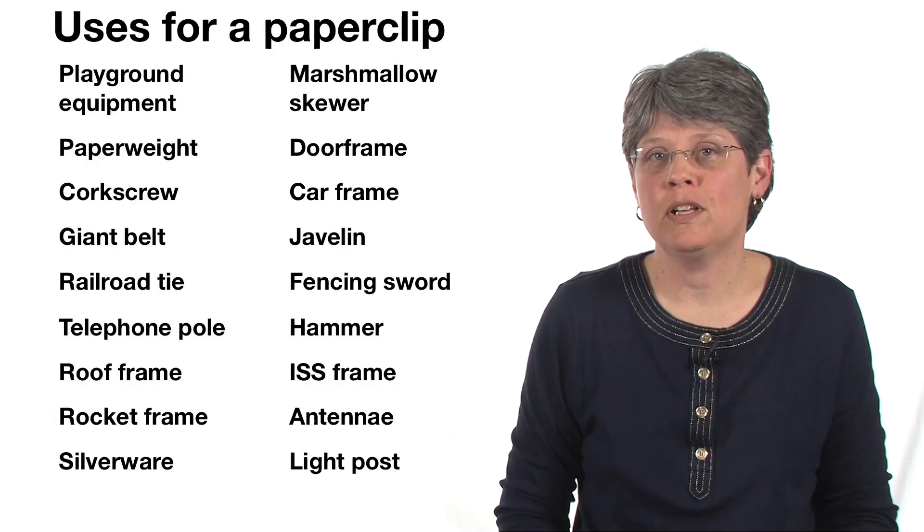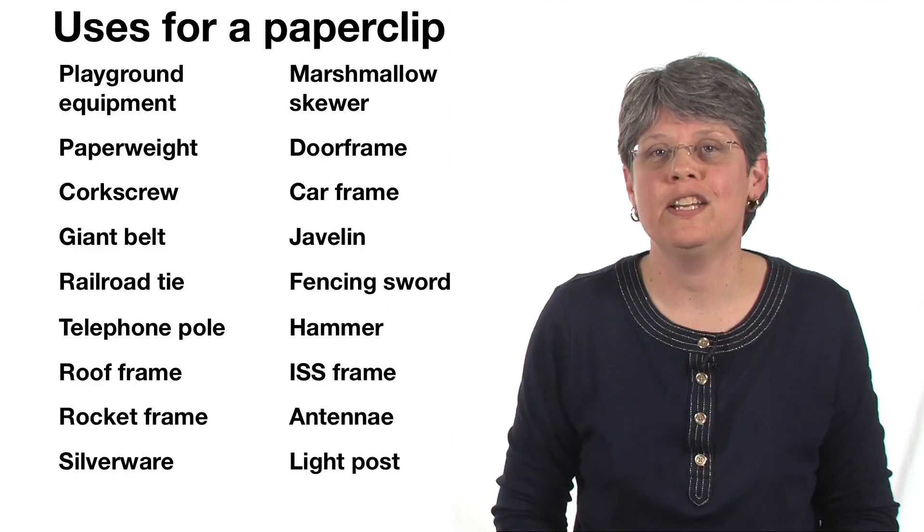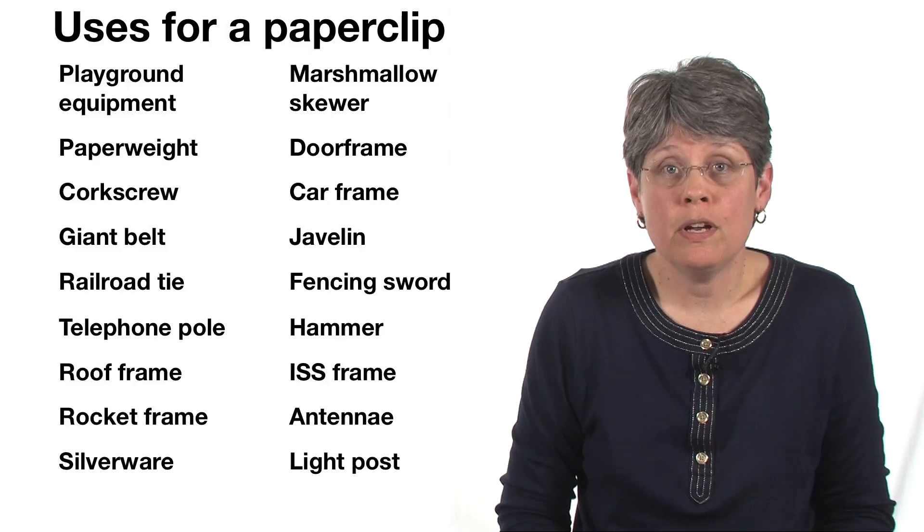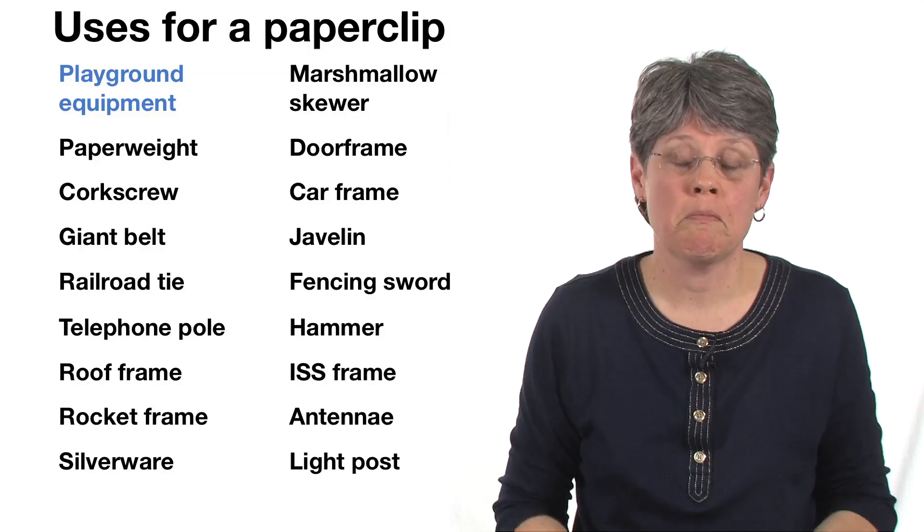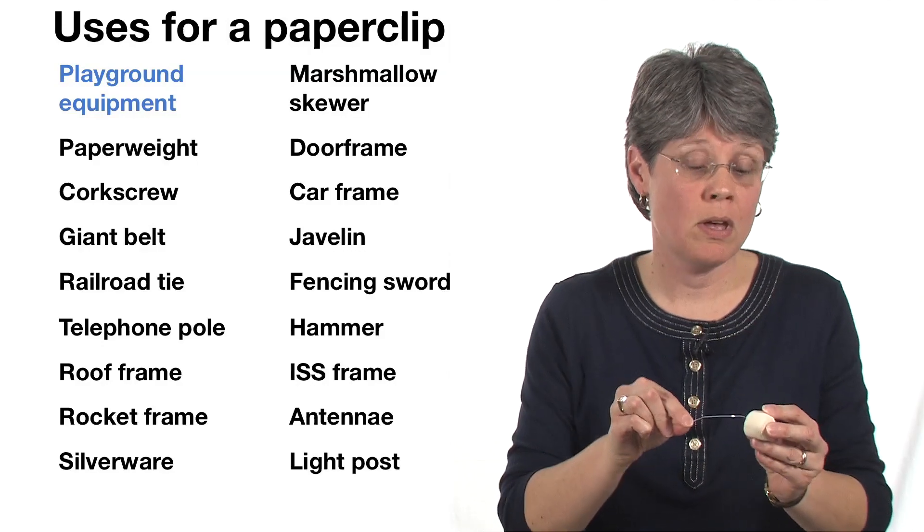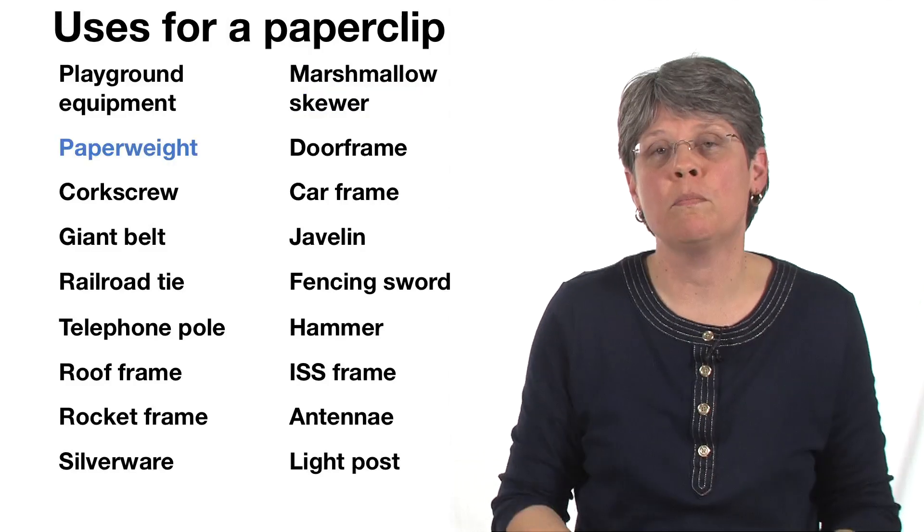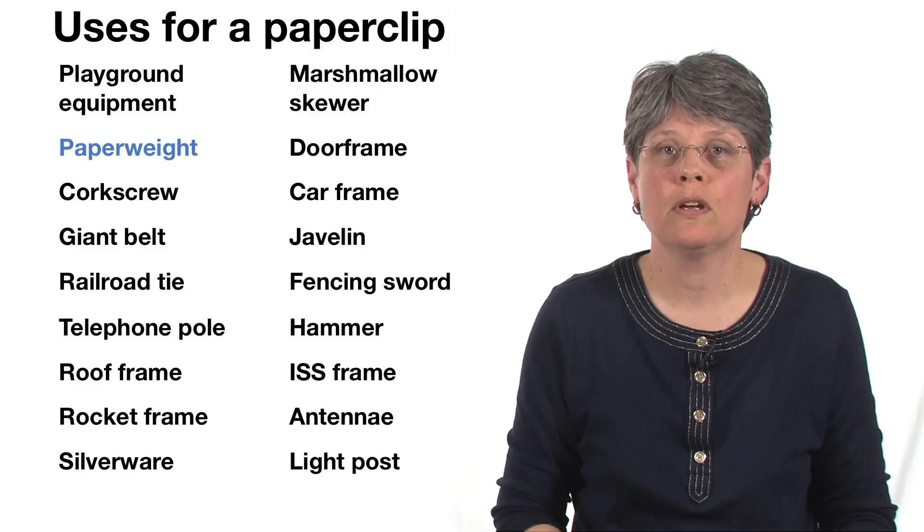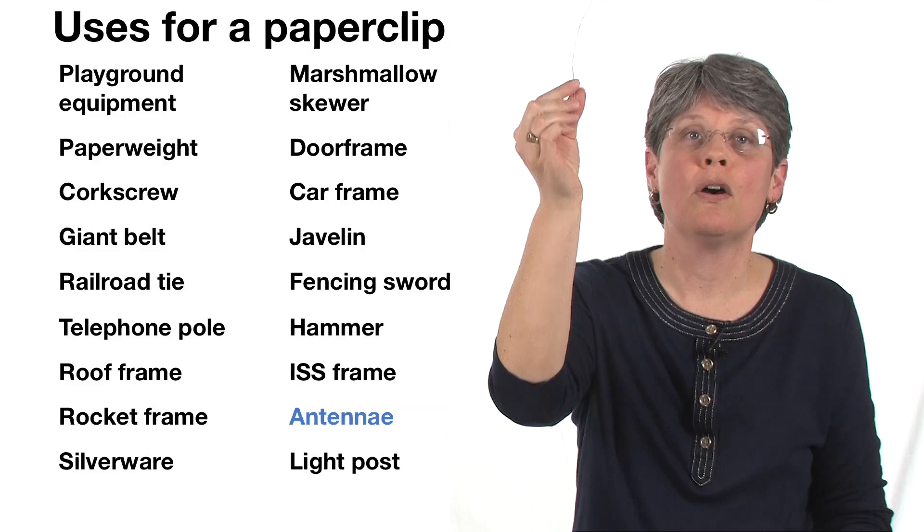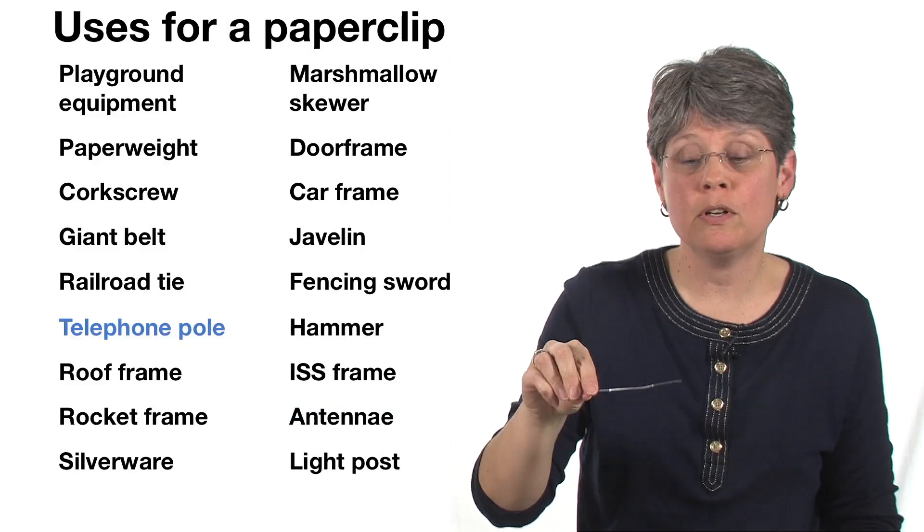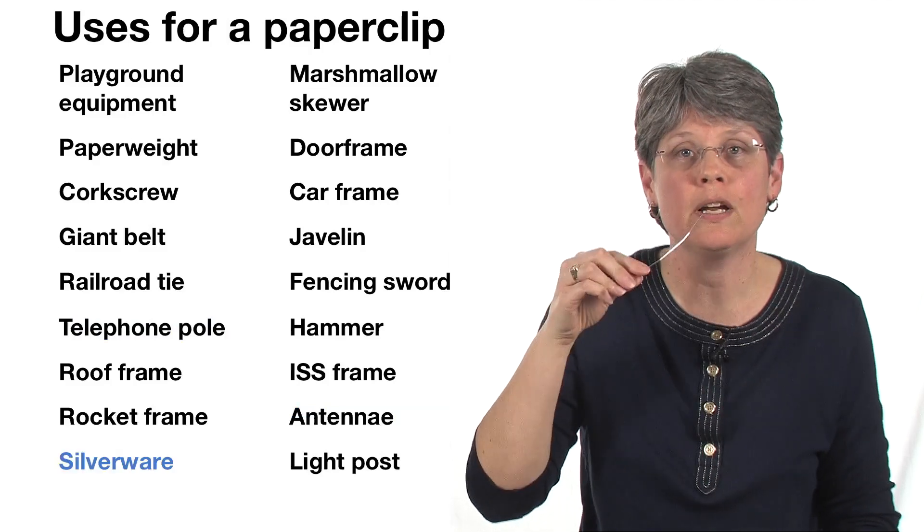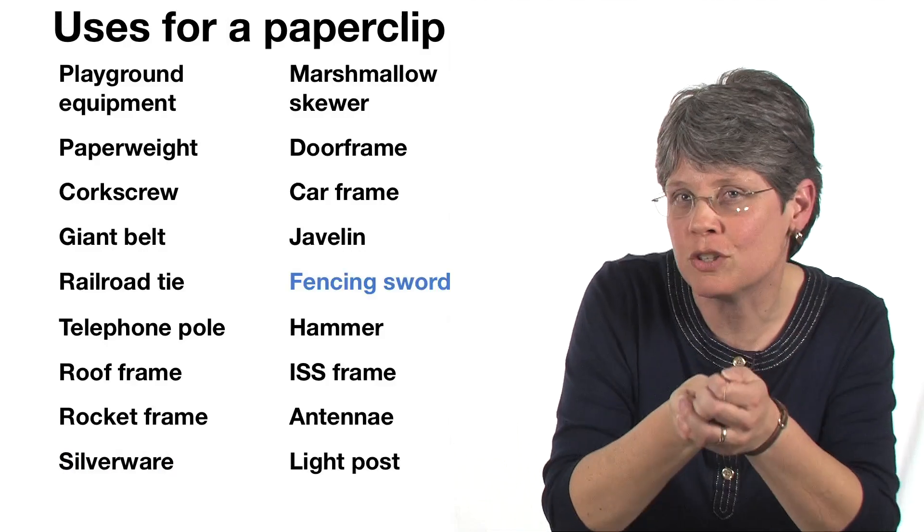If you imagine the paperclip is big, there are all kinds of ideas you could have. The paperclip could be a piece of playground equipment. It could be used as a marshmallow skewer. It could be used as a paperweight for books or papers on your desk. It could be used as an antenna or as a telephone pole. The paperclip could be used as silverware when you're eating or finally as a fencing sword.